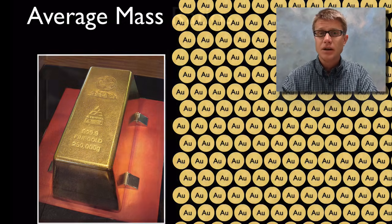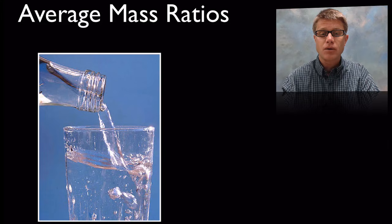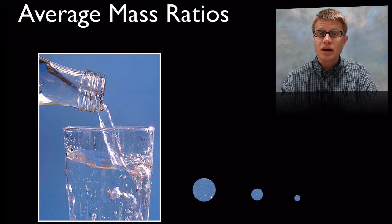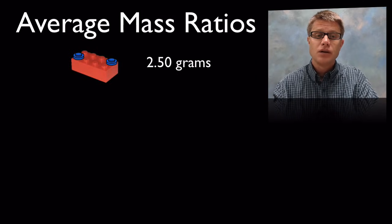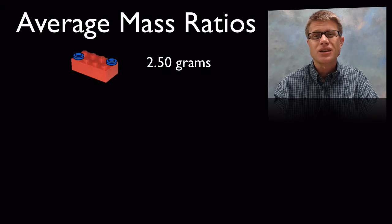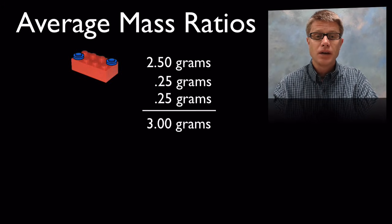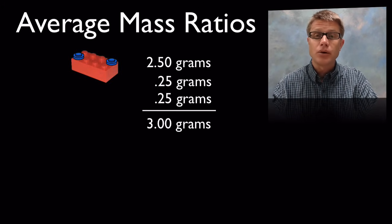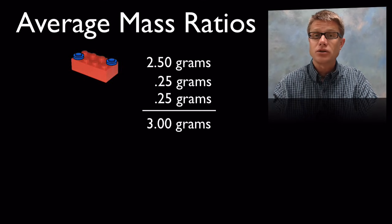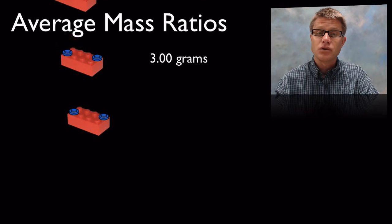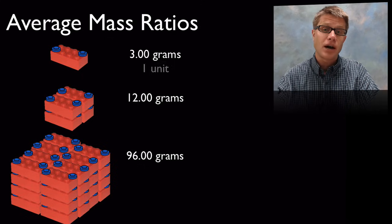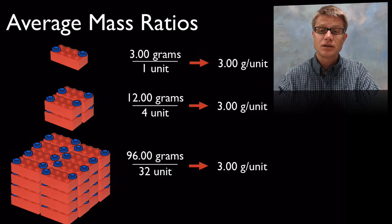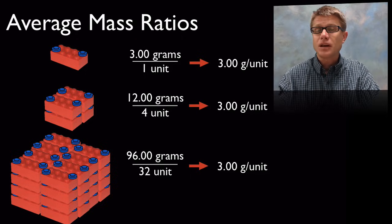Now this is just elements we're talking about, but the same thing applies to molecules. So if we're looking at water, small, smaller and smallest sample of water are still going to have the same average mass. And how does that work? Well imagine we go back to the Lego analogy. If we've got one Lego brick that weighs 2.5. So we can think of that as like the oxygen molecule. And then we add 2 of these little blue bricks. Each of those weigh 0.25 grams. Then we're going to have a total mass of 3.00 grams. And so it doesn't matter if we have 1 of those units or 4 of those units or 32 of those units. It's still going to have the same average mass if we divide by the number of units. So that's an example of water.